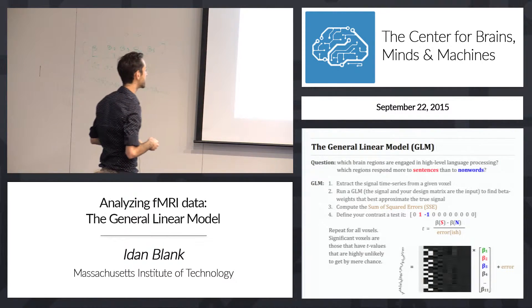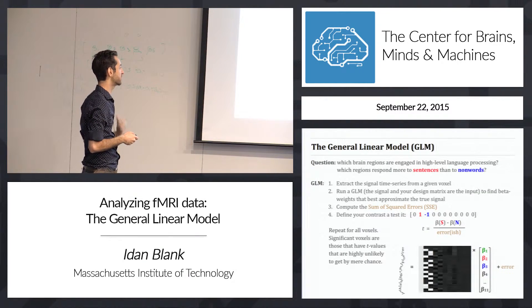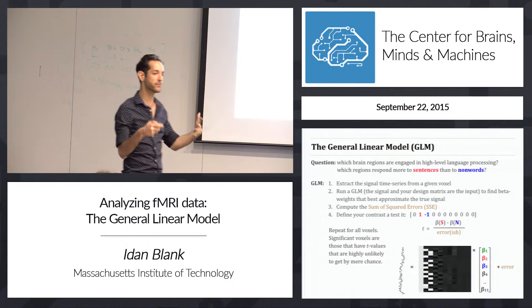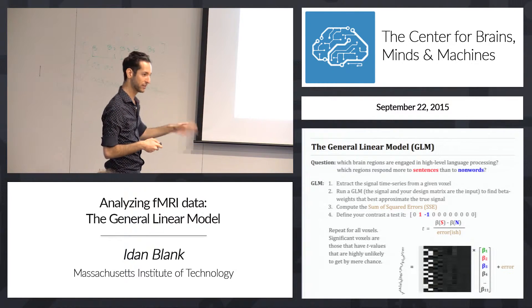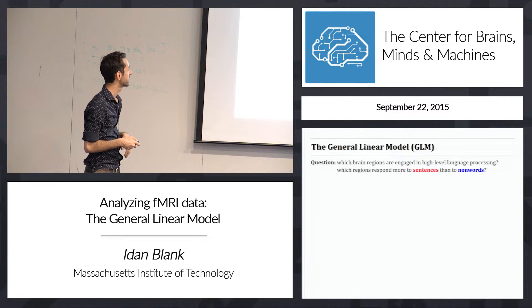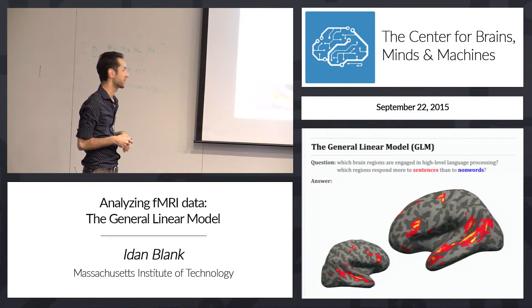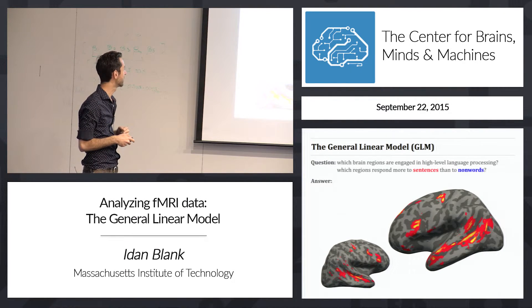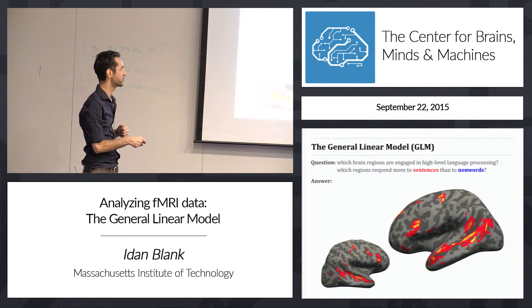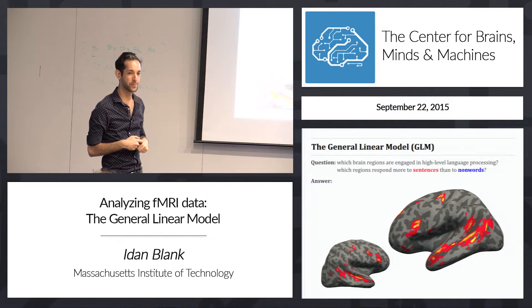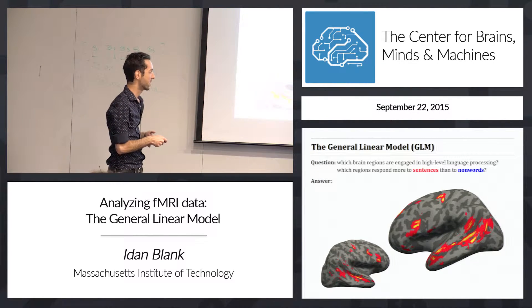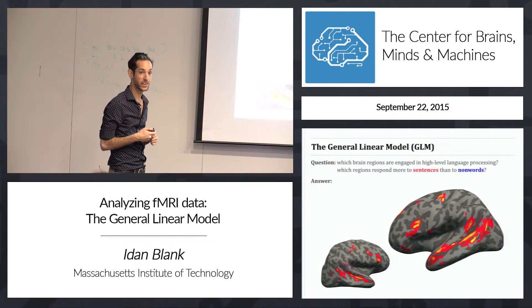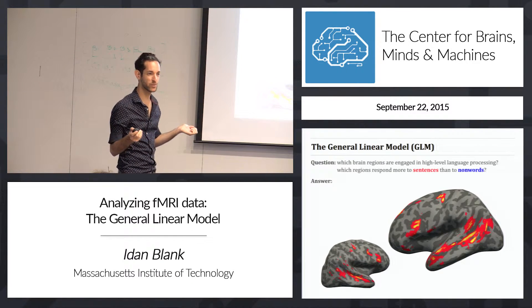Significant voxels are those with T values that are highly unlikely to occur by chance — T values that are very, very big. When you do that, you get the language system: a big strip in the temporal lobe. You've probably heard about Wernicke's area — people with lesions there have trouble understanding speech. They speak fluently but produce gibberish, and they're not even aware of it. You also get some regions in the frontal lobe, like Broca's region.